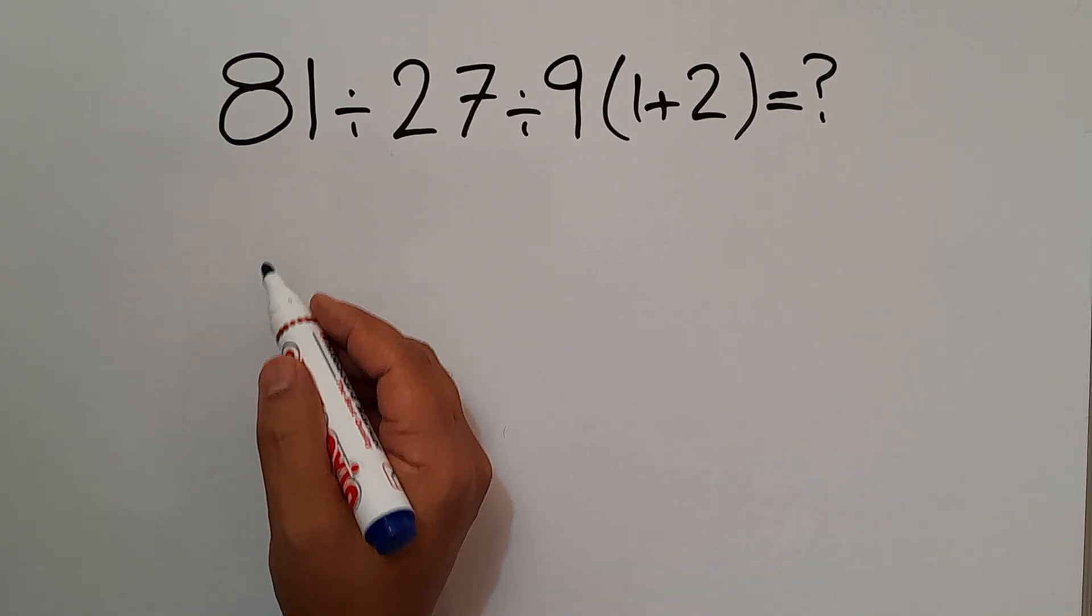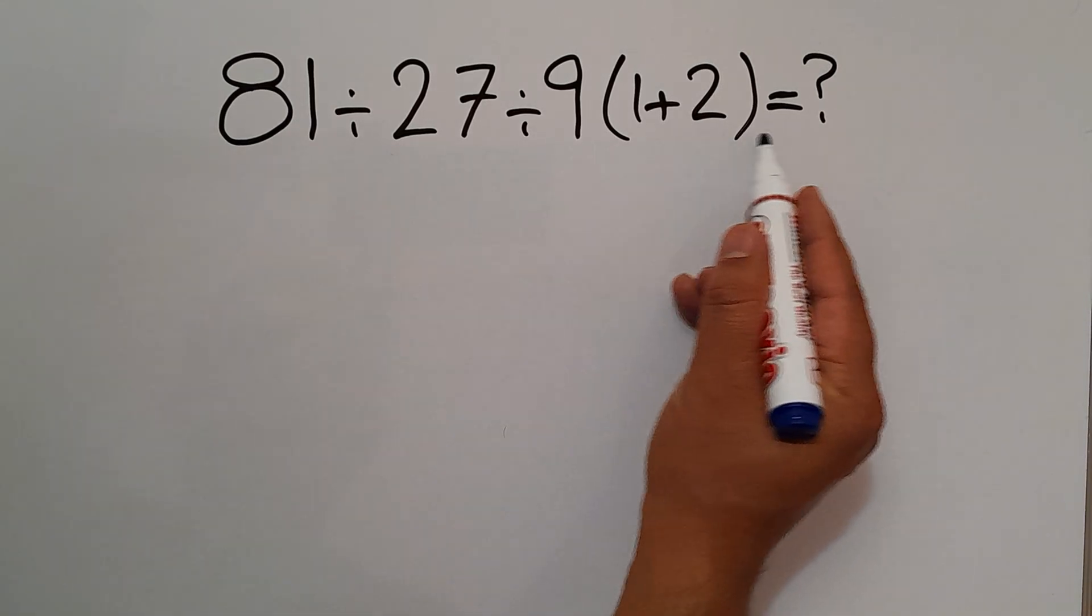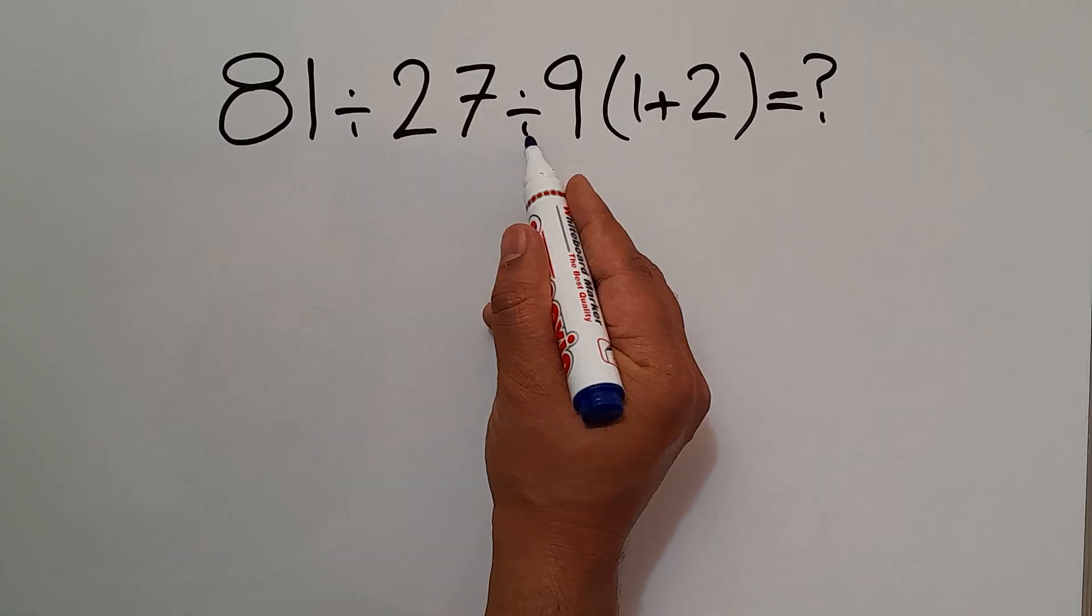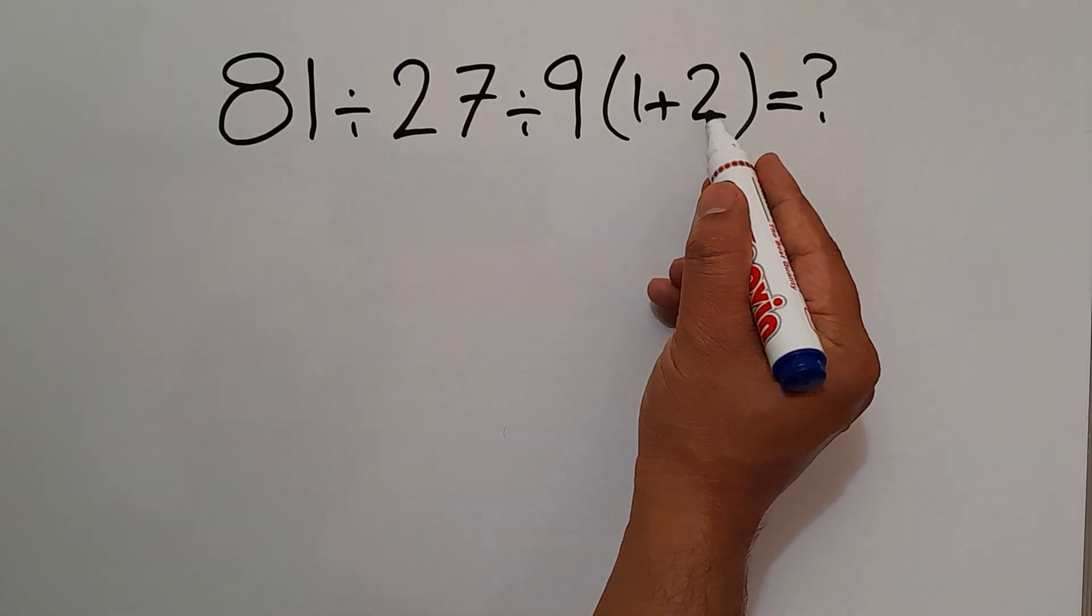Hi everyone and welcome to this video. In this video we want to find the value of this expression: 81 divided by 27 divided by 9 then times 1 plus 2.